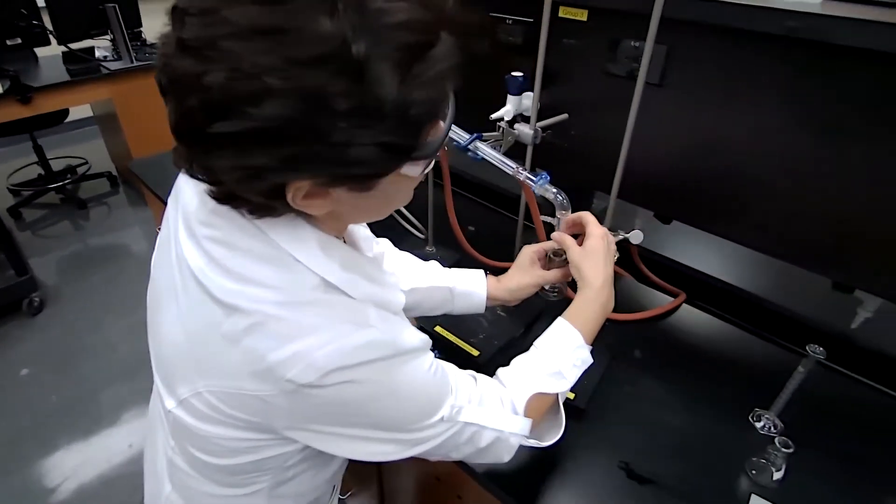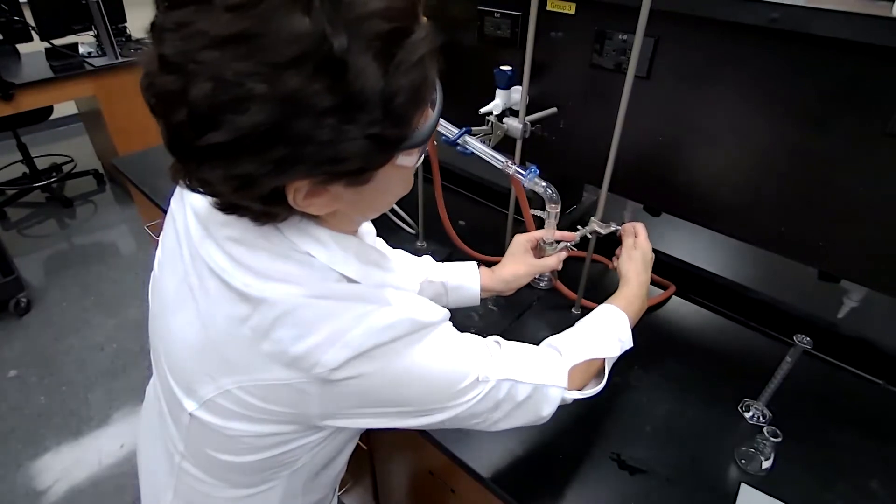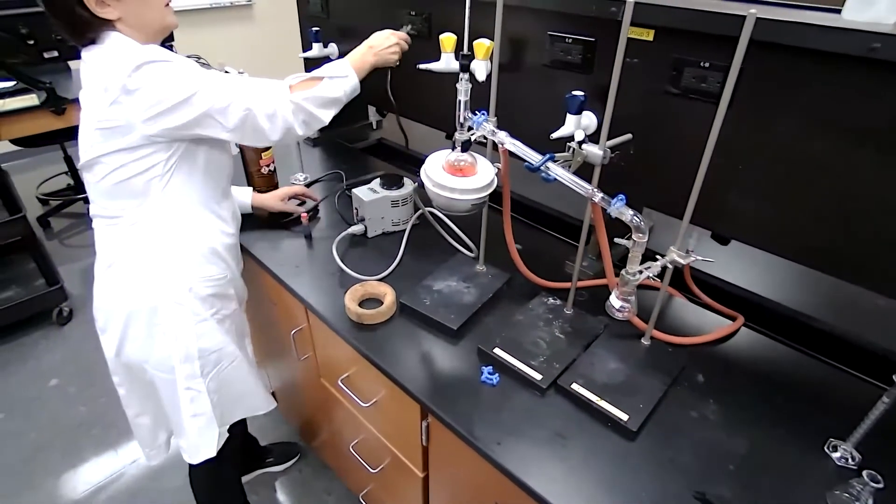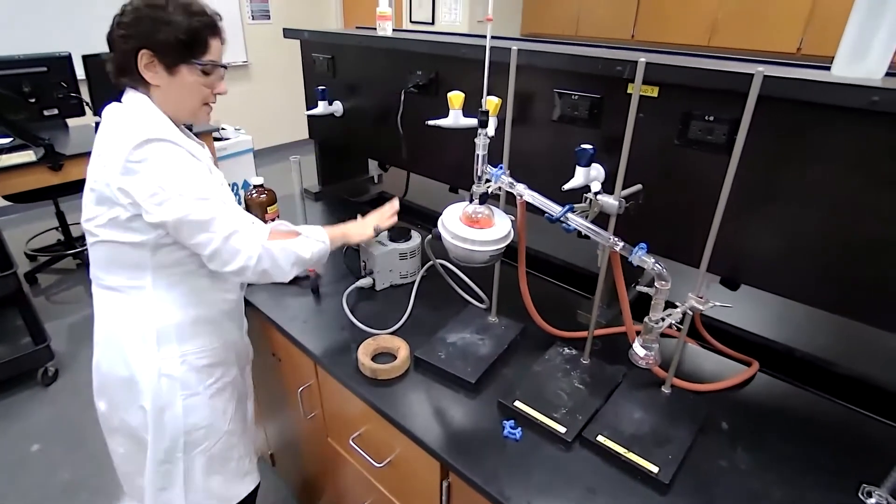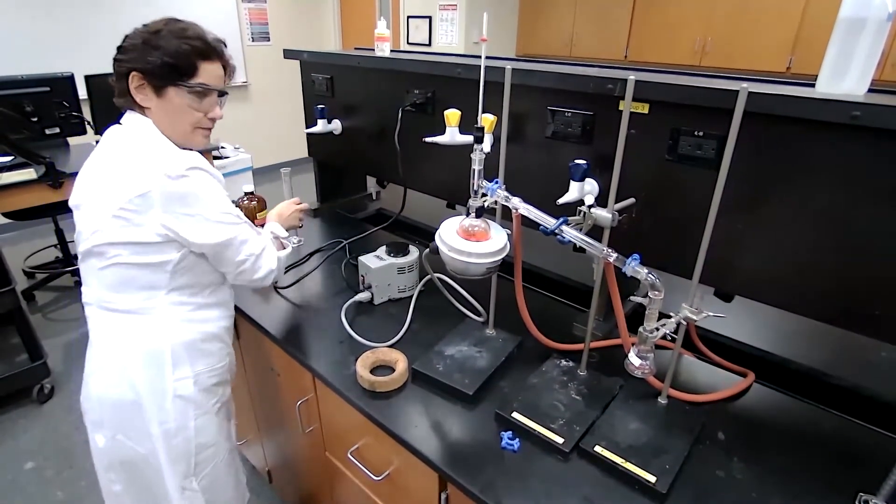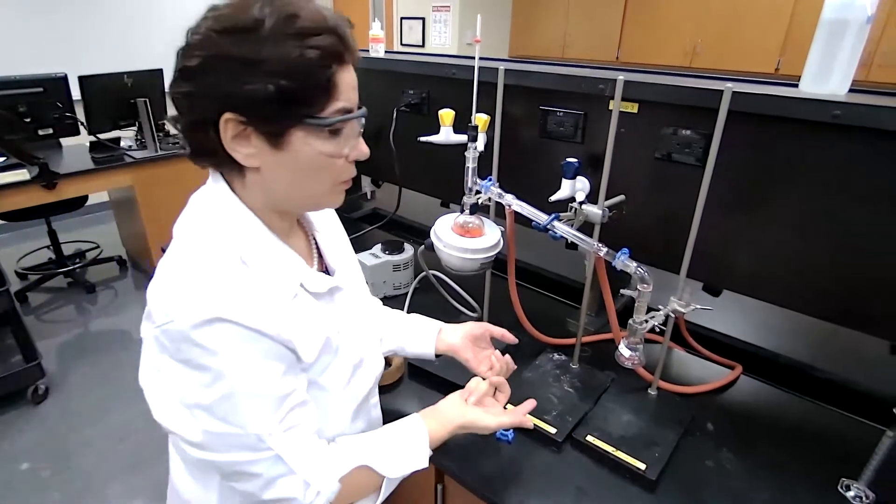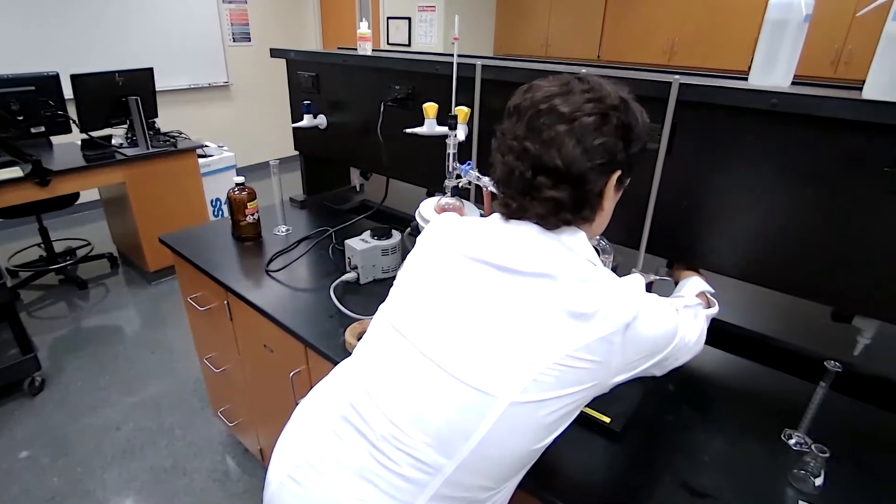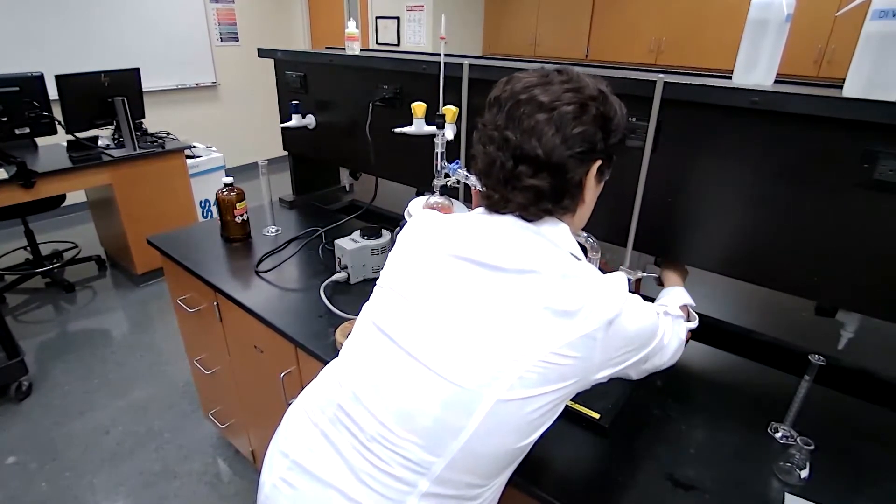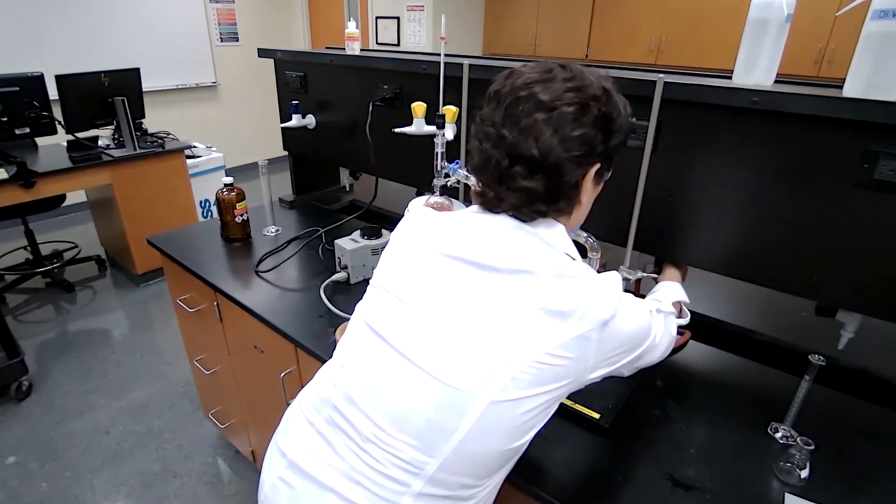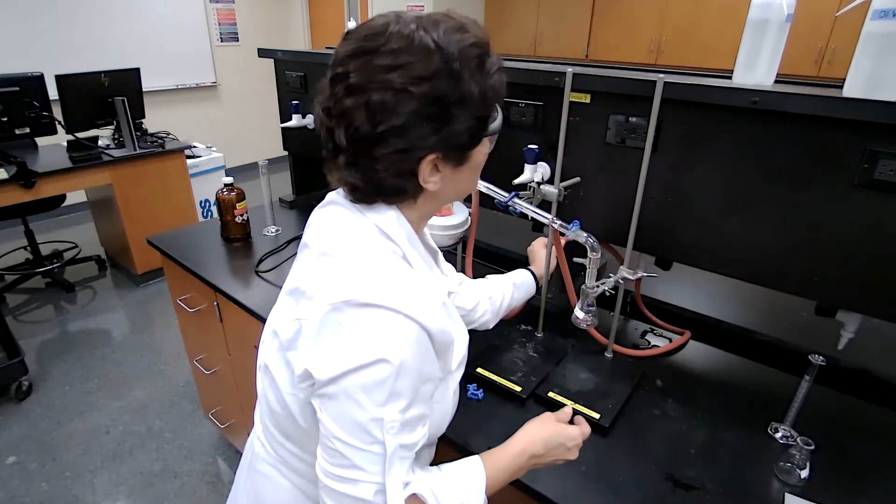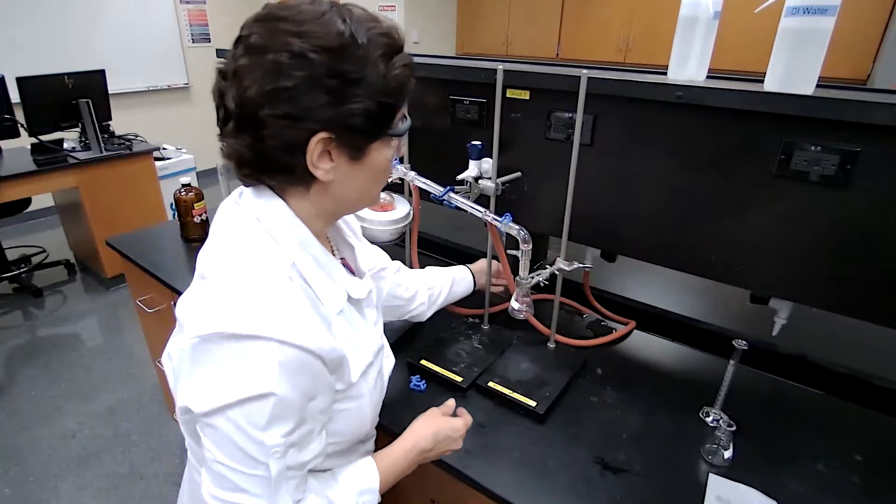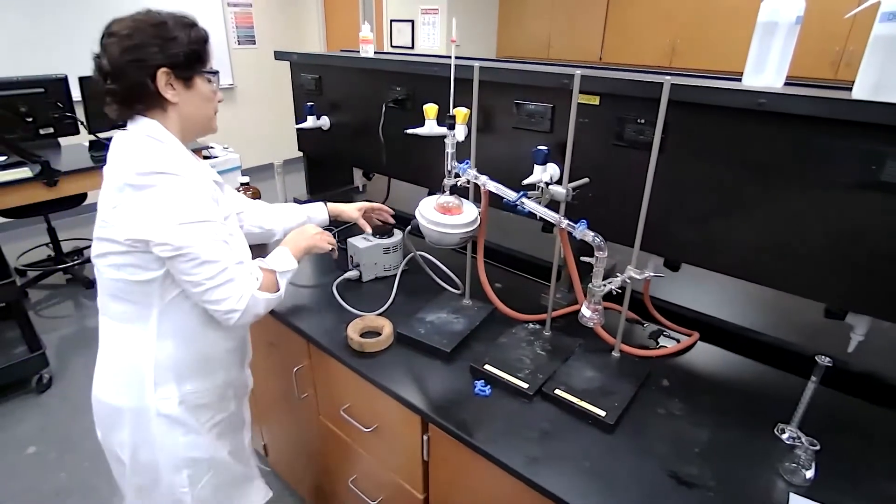Adjust the heating mantle, adjust the receiving flask. Connect the power regulator. Turn on the water first. Turn on the water with gentle flow of water. So that's a low flow of water. We are turning on the water first. Turn on the heat.